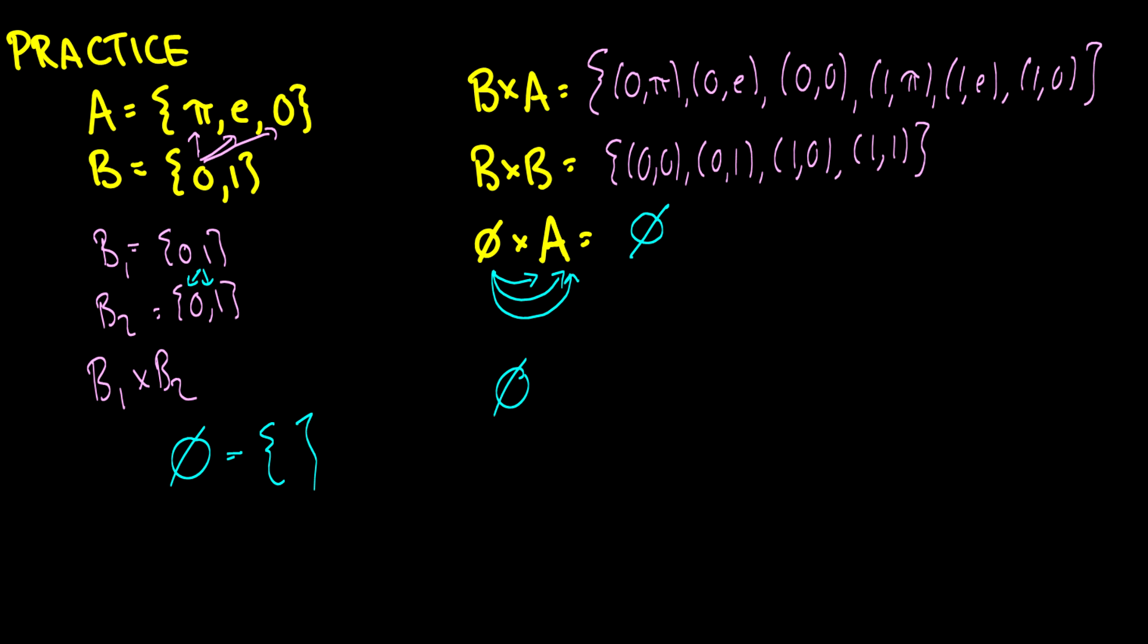So if you have an empty set and you cross it with, say, A cross B cross C cross D cross E, and you keep going on and you keep crossing it with stuff—this is not actually good notation at all, let's make this slightly better notation—then this is still going to be the empty set, because we cannot have an element in an ordered pair that has nothing in it.